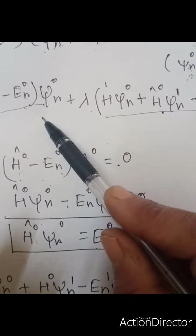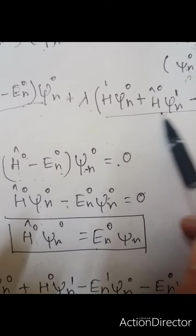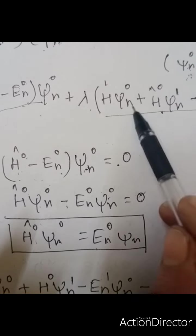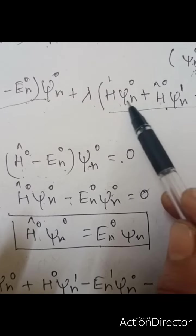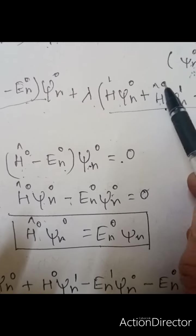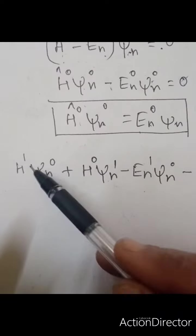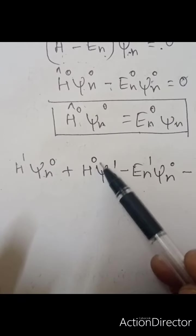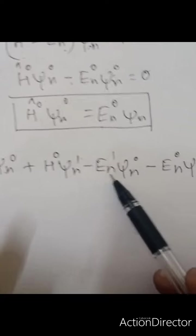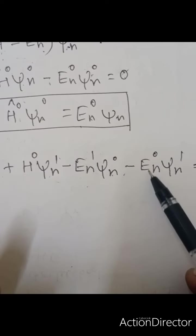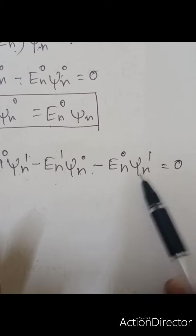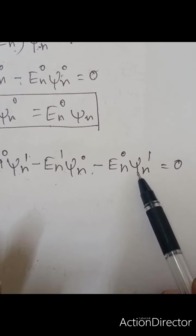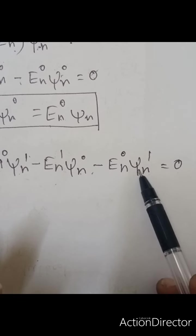For the first-order correction, we take the terms inside the lambda bracket: H′ψₙ⁰ + H₀ψₙ¹ − Eₙ¹ψₙ⁰ − Eₙ⁰ψₙ¹ = 0. This is what is known as the first-order correction or the first perturbation equation. We will now proceed to solve this.